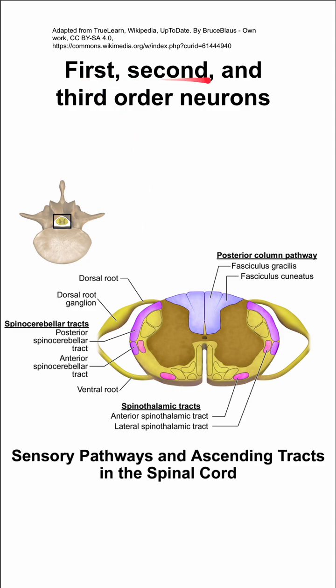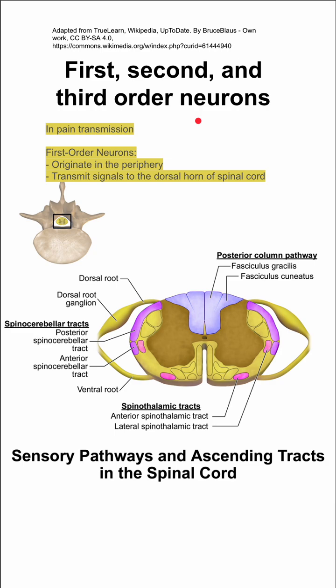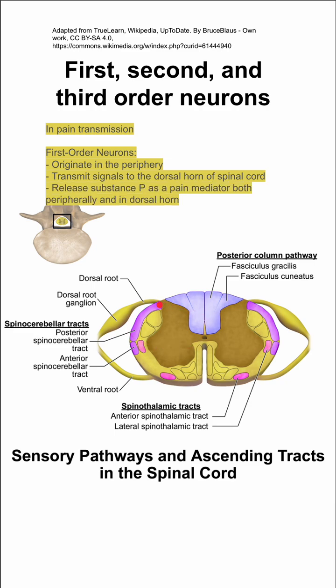Here are some notes on first, second, and third order neurons involved in pain transmission. The first order neurons originate in the periphery and they transmit signals to the dorsal horn of the spinal cord. They release substance P as a pain mediator both peripherally and in the dorsal horn, and they connect to second order neurons in the dorsal horn.